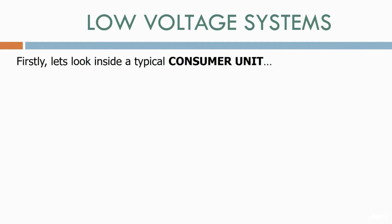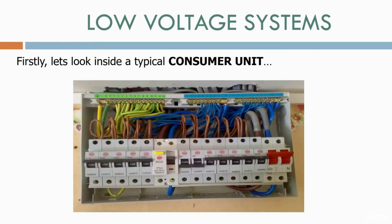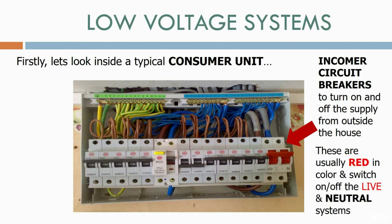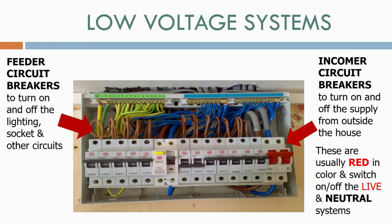Let's look inside a typical consumer unit. The first thing we have is an incomer circuit breaker to turn on and off the supply from outside the house. These are usually red in colour and switch on and off the live and neutral systems. There are also feeder circuit breakers to turn on and off the lighting, socket, and other circuits. These normally switch the live feed only.